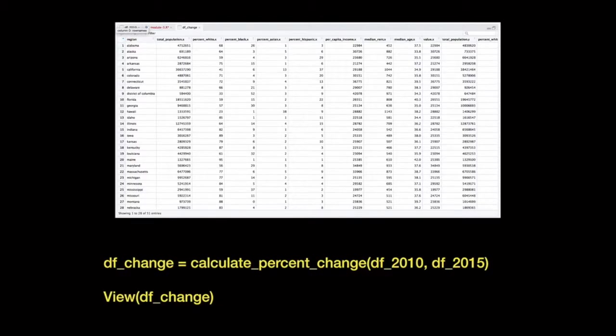Continuing with our example from earlier in this module, here is code to create and view the percent change in per capita income between 2010 and 2015.